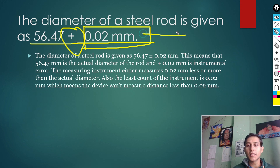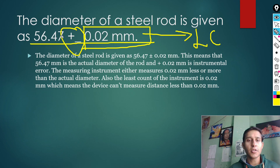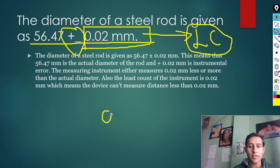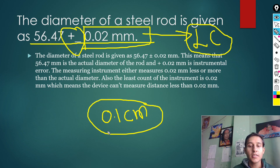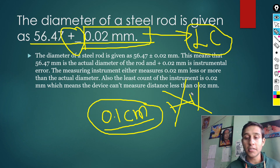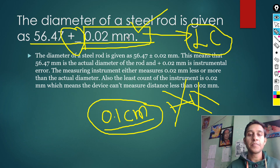Now I'll show you the next point: least count. The first point is that plus-minus in a measurement refers to the least count. The least count is 0.1 cm.